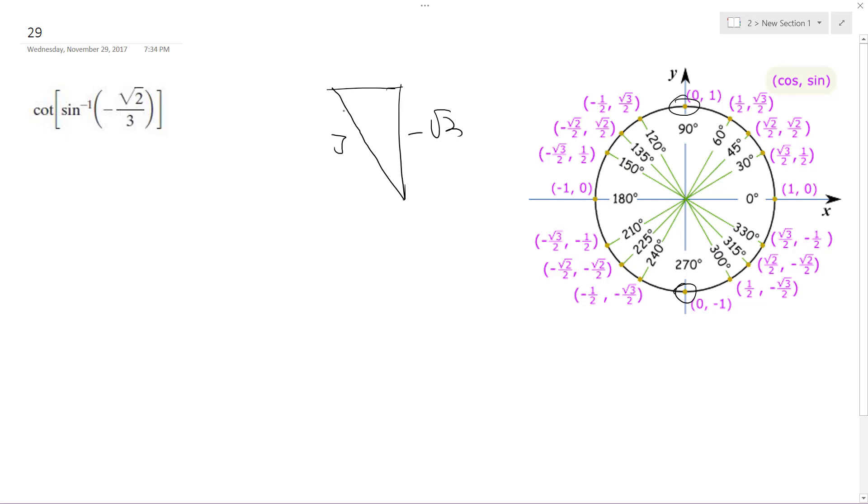And this is going to be equal to 9 minus 2. I did the Pythagorean theorem real quick, and then square root of 7. So I didn't quite do this right, but that's okay.